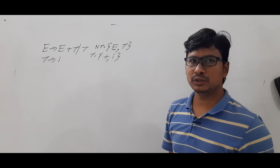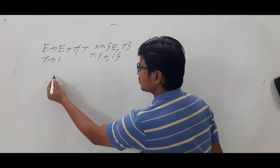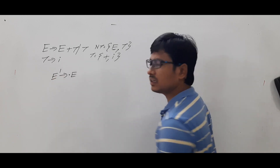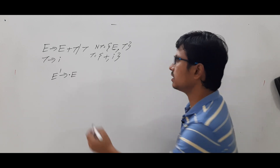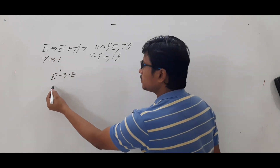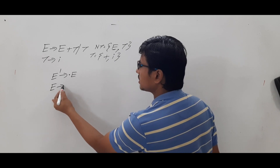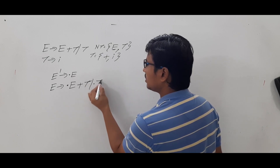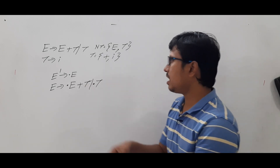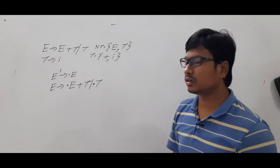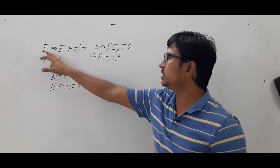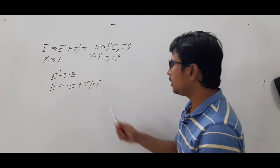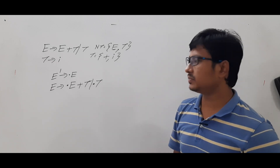First I need to construct the LR(0) items. So E' → •E — we take the augmented production and compute the closure. Since there is a dot before E, a non-terminal, we need to take the productions of E and keep the dot in front: E → •E + T and E → •T. After dot there is a non-terminal, so we compute the closure by looking at those productions.